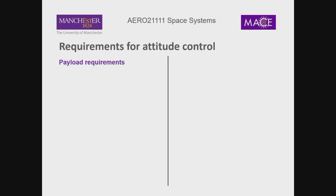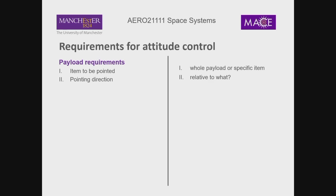In terms of our payload, our attitude control system may have requirements from the payload. It might be that a particular item needs to be pointed — it could be the whole payload or just a specific item, with the rest of the spacecraft possibly spinning separately. A particular example is an Earth observation satellite where the camera needs to point towards the ground — towards nadir. Or if you've got a satellite observing the sun, the payload must keep pointing in that direction relative to some baseline.